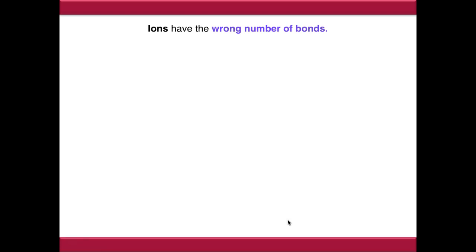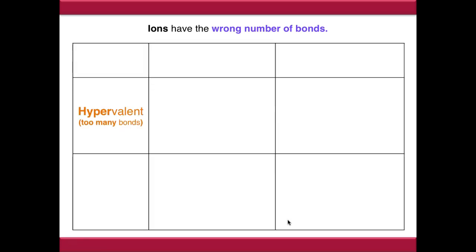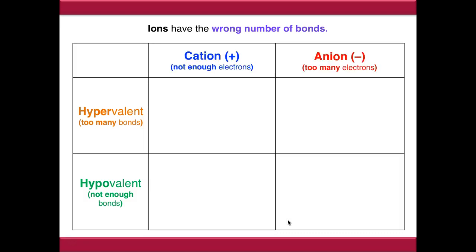Ions have the wrong number of bonds, but we can classify this. They've either got too many bonds - they are hypervalent - or they have too few bonds - they're hypovalent. And if we categorise them as cations or anions, we can say that cations don't have enough electrons, and anions have too many.